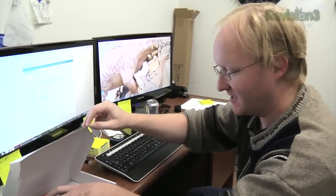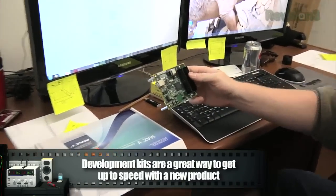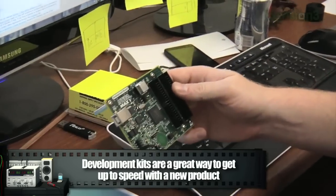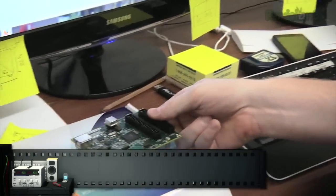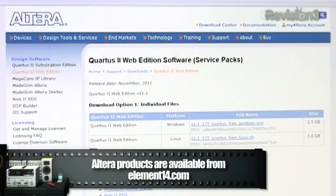All right, so we've got the Altera Max 5 development kit here. Now, this is actually a CPLD, a complex programmable logic device. It's different from an FPGA, but it's along the same lines. So first, we're going to get the software. We're going to go to Altera's website, go to the Quartus 2 web edition software service packs, and download the Windows version.